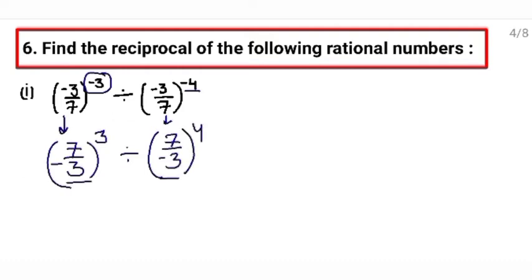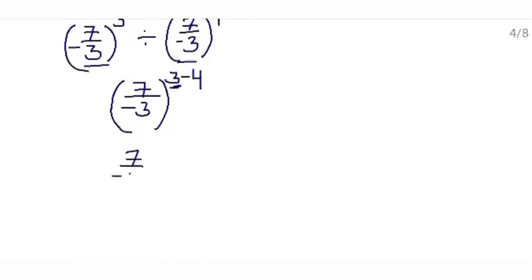Here bases are same, so we will write the base once: 7 upon minus 3. We are dividing them, so exponents will be subtracted: 3 minus 4. Signs of both exponents are different, so these will be subtracted — it will become 1, and the sign will be of the greater numeral which is minus. Now its power is minus 1.